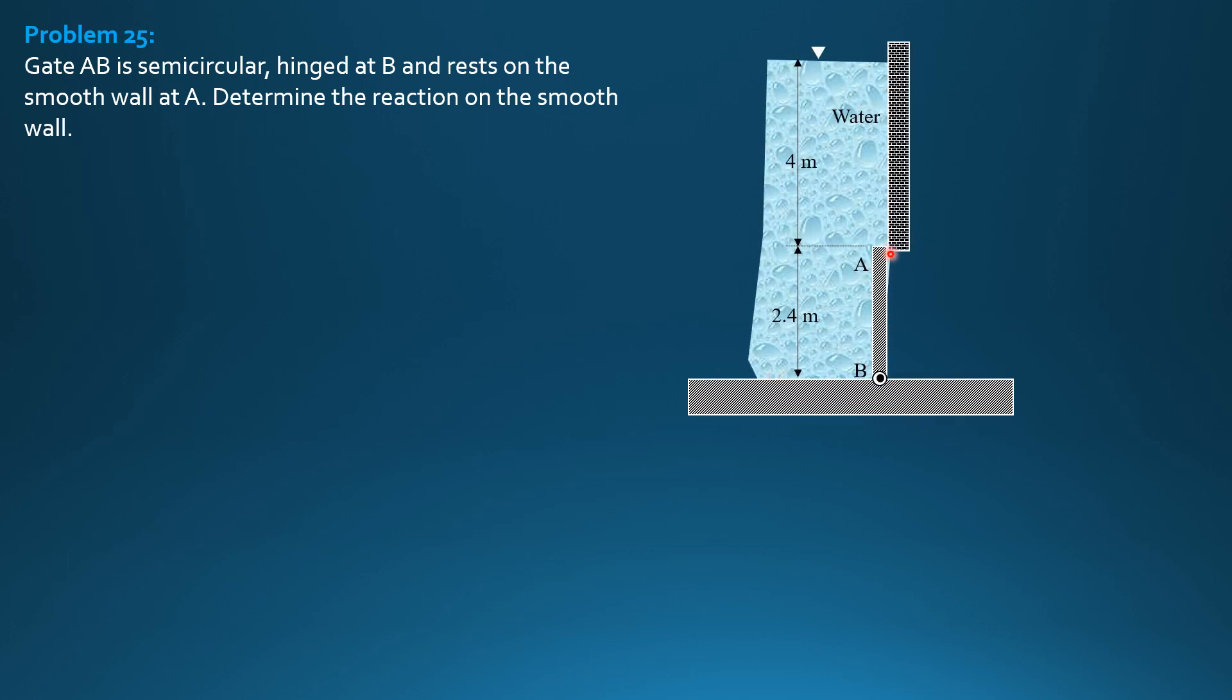So, this is the wall, hinged at B, and the section is semicircular. Let's show it so that we can analyze it well. This is the centroid, the red one, and the center of pressure, the yellow one.